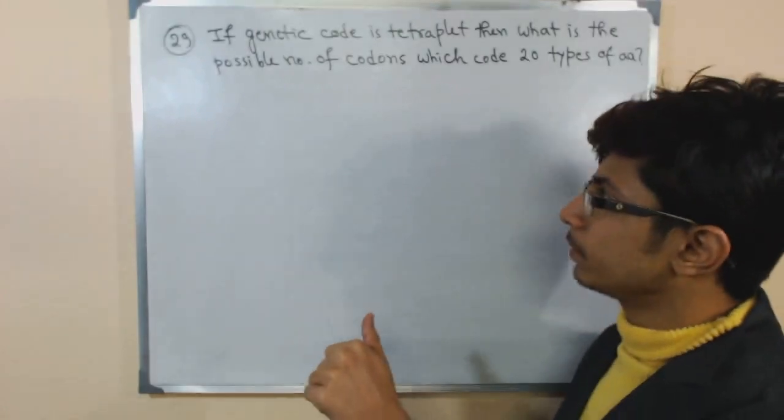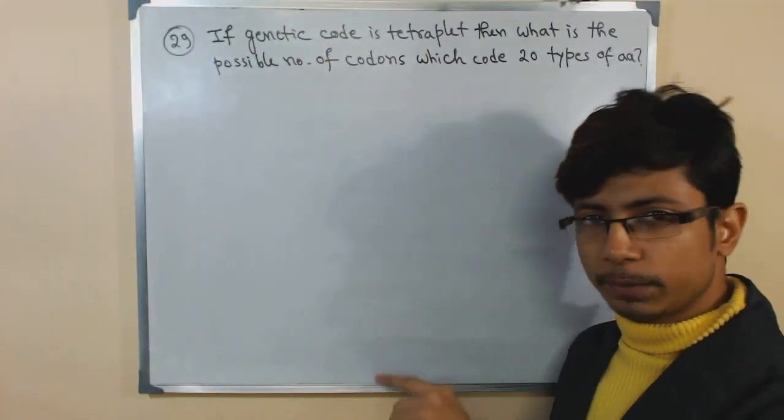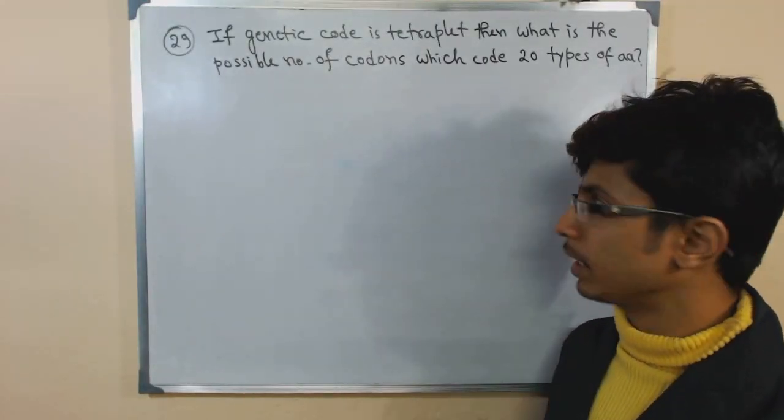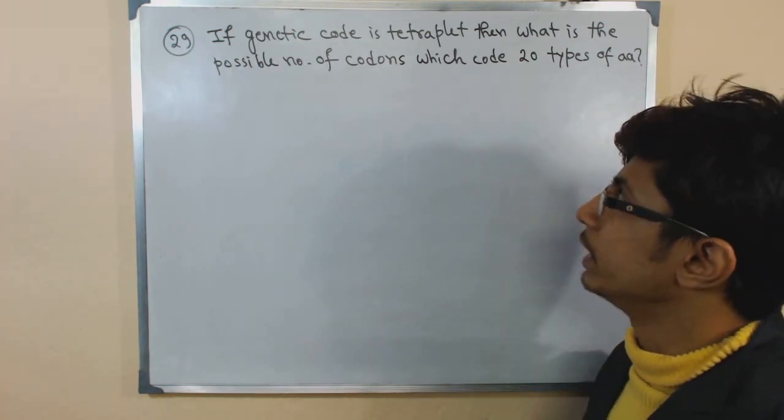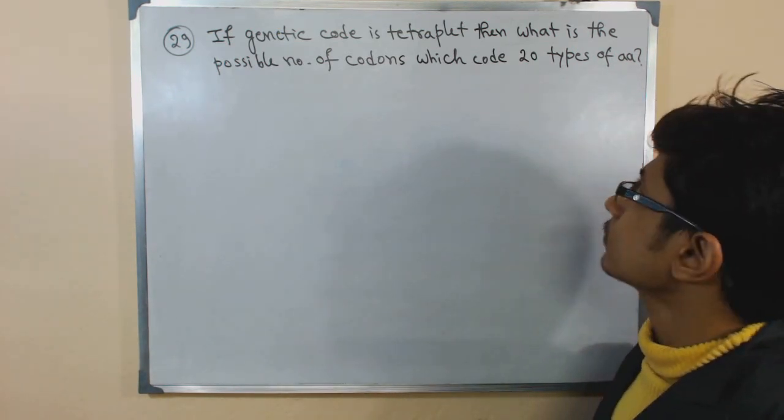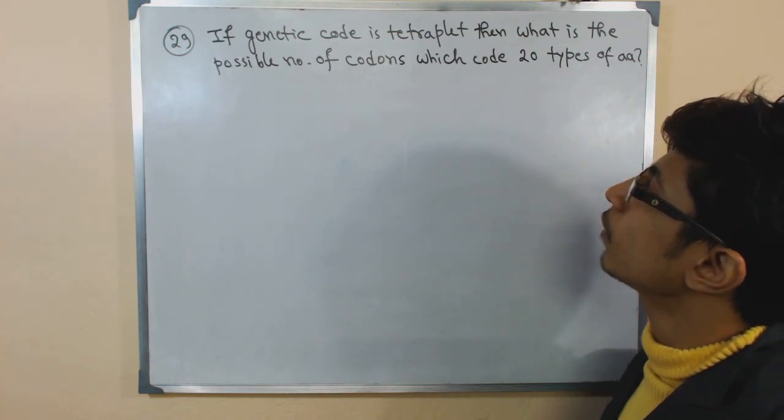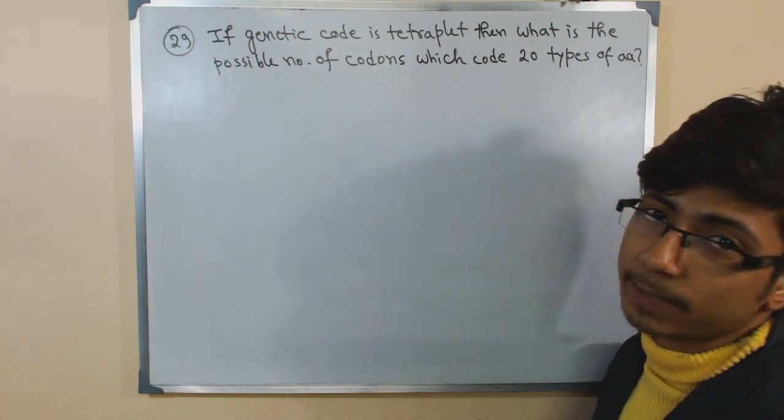Now here comes another genetic code problem for you which also applies the same formula that we talked about previously. If a genetic code is tetraplate, then what is the possible number of codons which code for 20 types of amino acids?